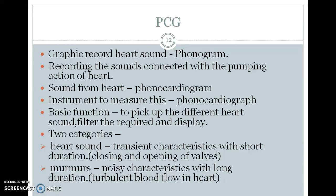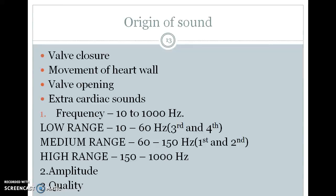This includes the opening of the tricuspid, bicuspid, and mitral valves. Murmurs are defined as noisy characteristics — the closing and opening sounds with long duration due to turbulent blood flow in the heart. The origins of sound include valve closure, movement of heart valves, valve opening, and extra-cardiac sounds. Frequency ranges include low range, mid range, and high range, and amplitude quality is also measured.